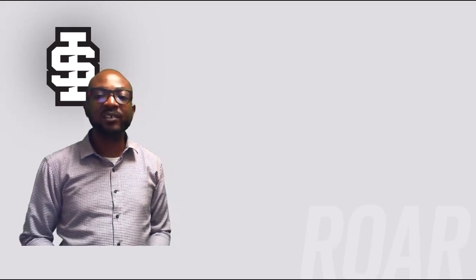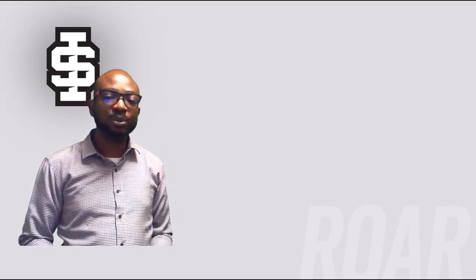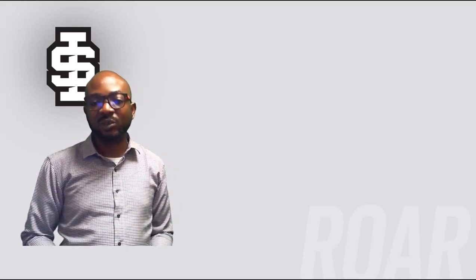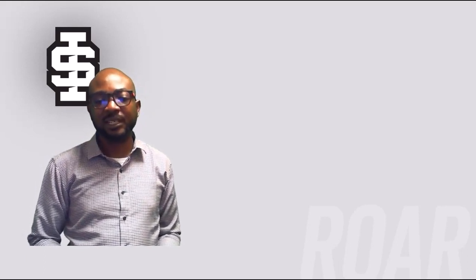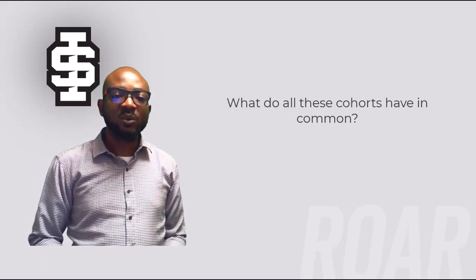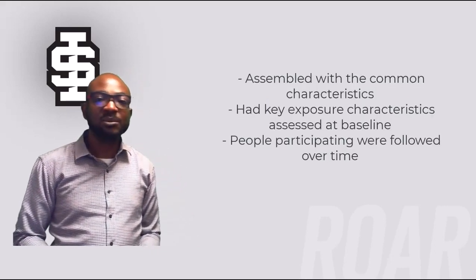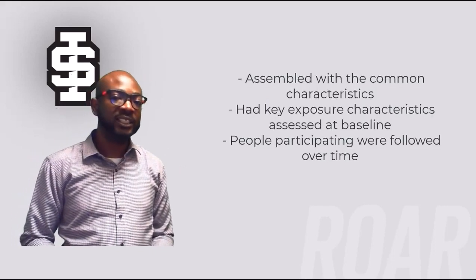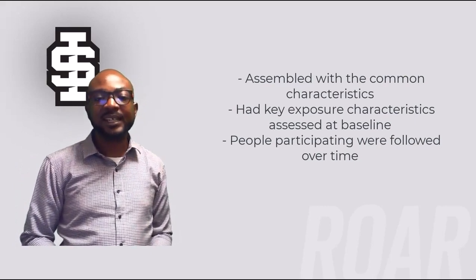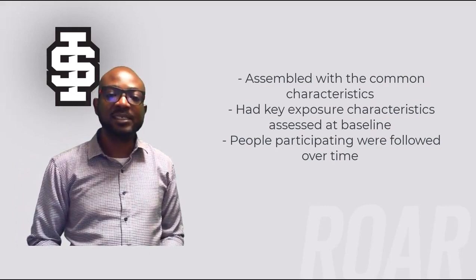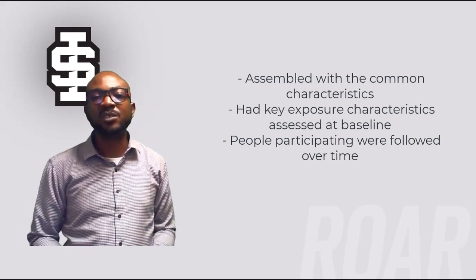In the United States, you may have heard of cohorts such as the Women's Health Initiative, comprised of 93,676 postmenopausal women between the ages of 50 and 79, followed for approximately 8 years. Other cohorts include the National Children's Study, a cohort of pregnant women in the United States, and the Framingham Heart Study. All these cohorts were assembled with common characteristics such as age and gender in mind, with key exposure characteristics assessed at baseline, and participants followed over time.